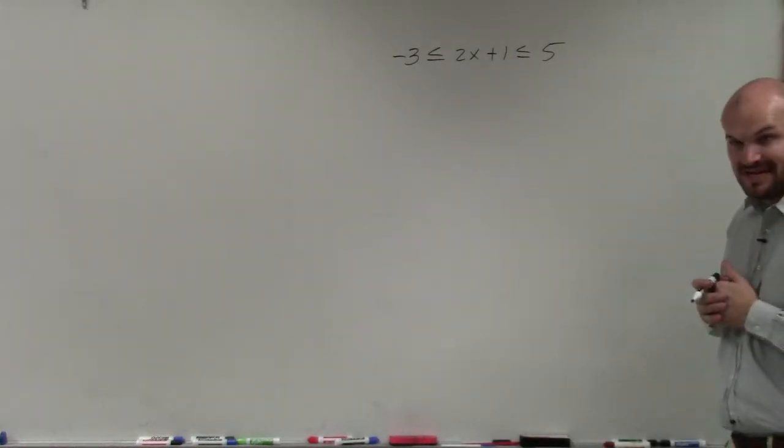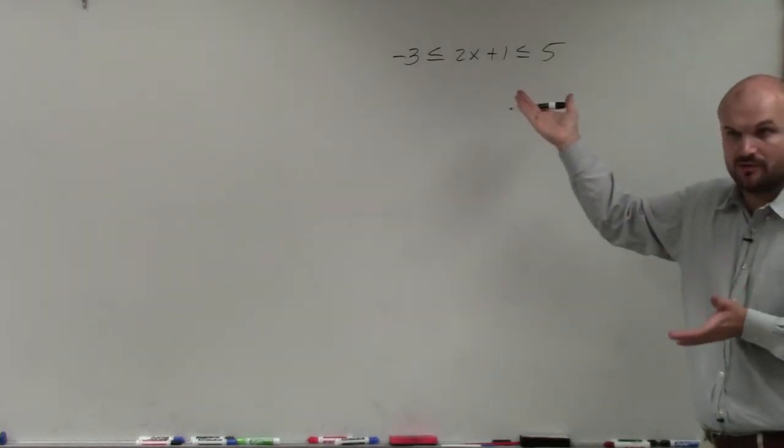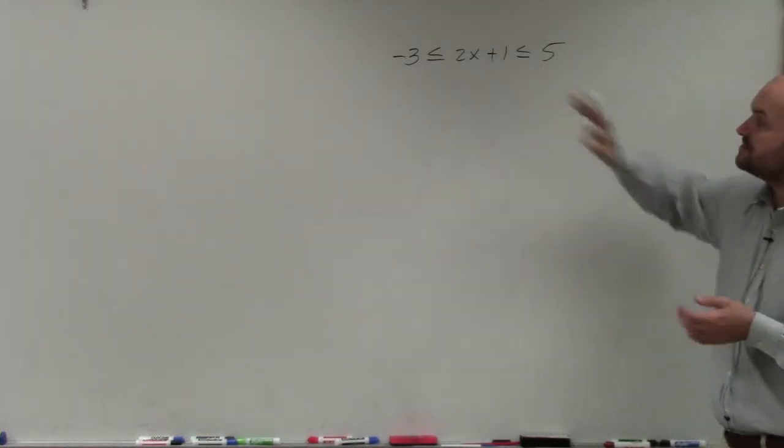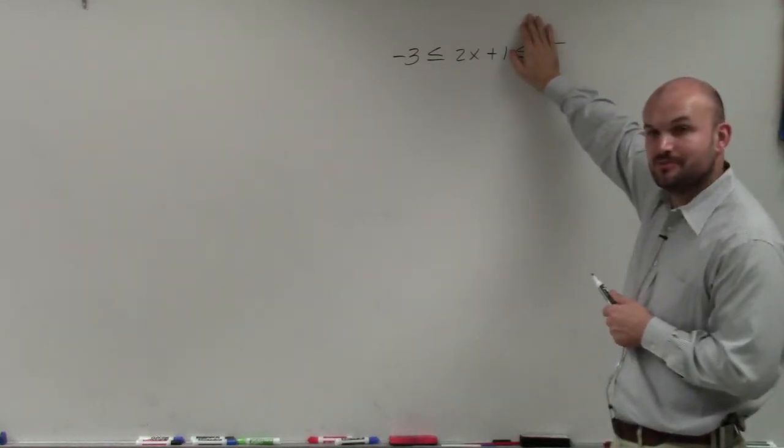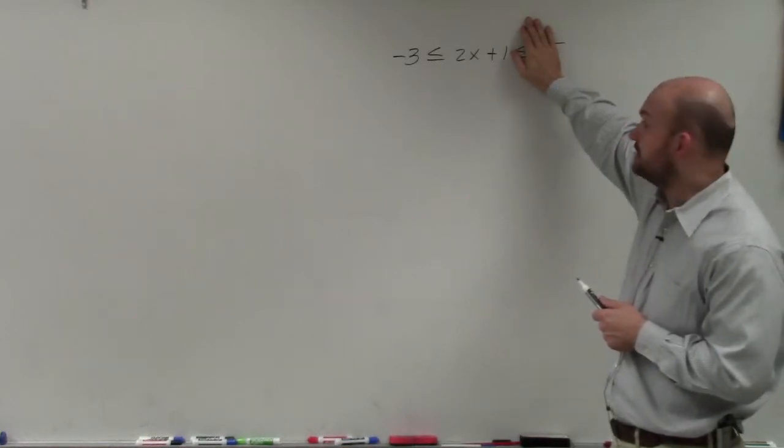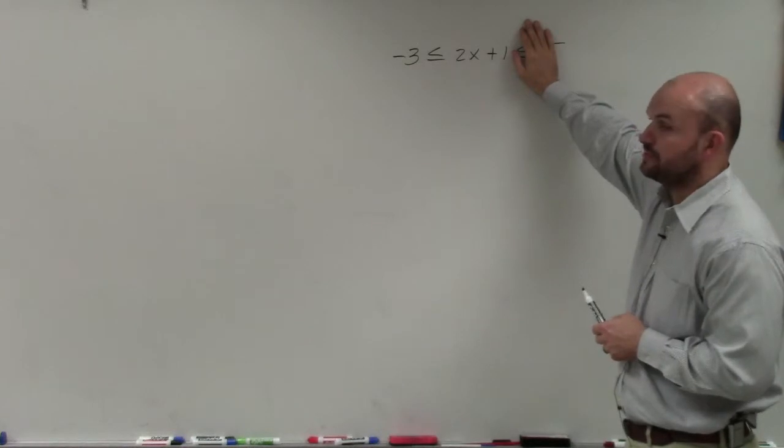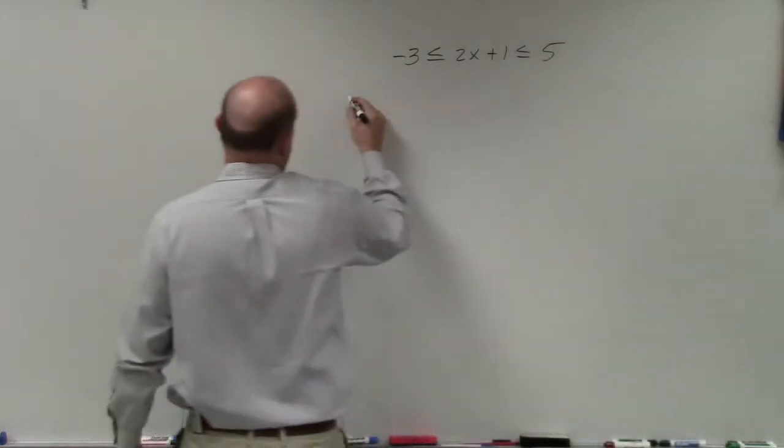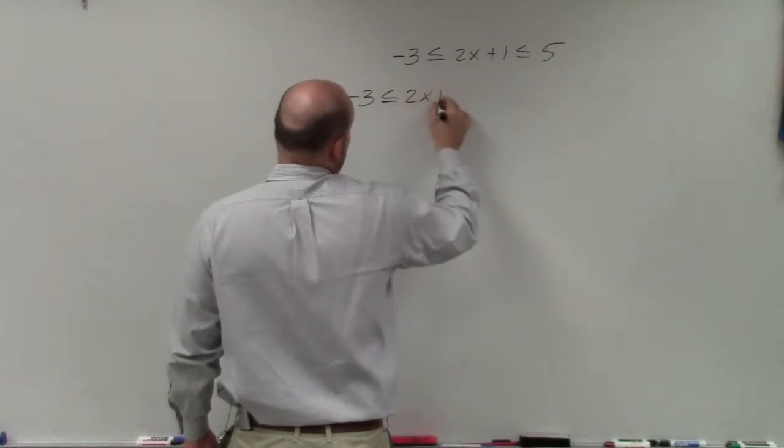So how do you write this as an 'and' compound inequality? Because the other one was just two inequalities with the word 'or'. Well, this one, we can still break it up into an 'and' inequality. The best way I like to do it is put your hand over your inequality and what it equals on the right-hand side, and just write negative 3 is less than or equal to 2x plus 1.